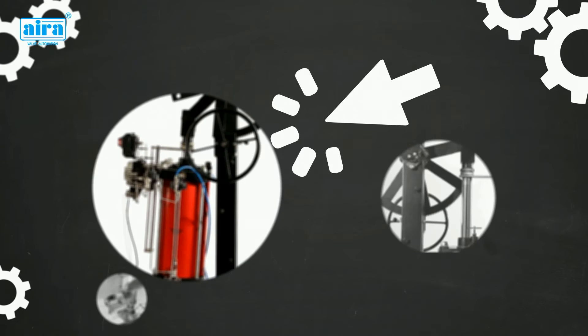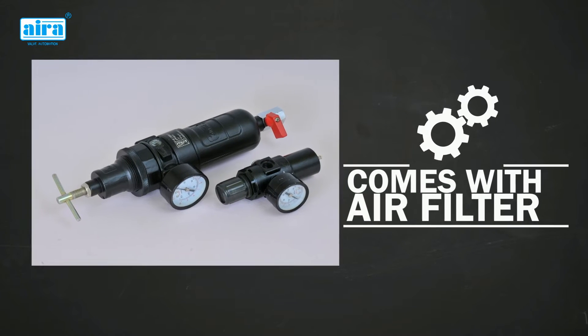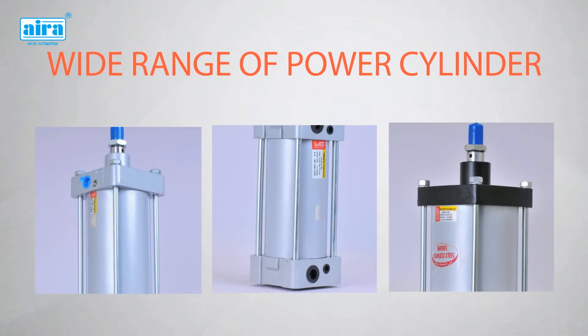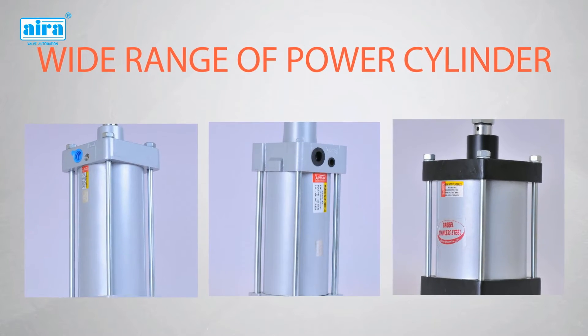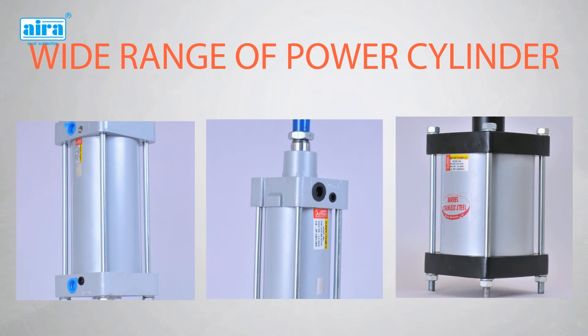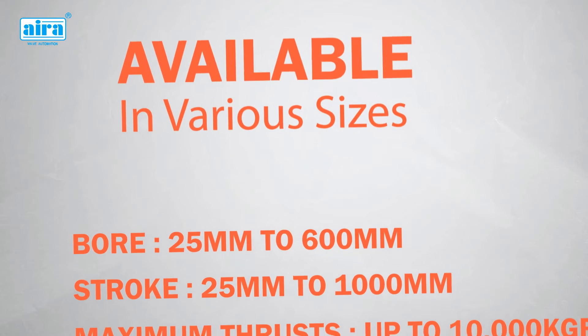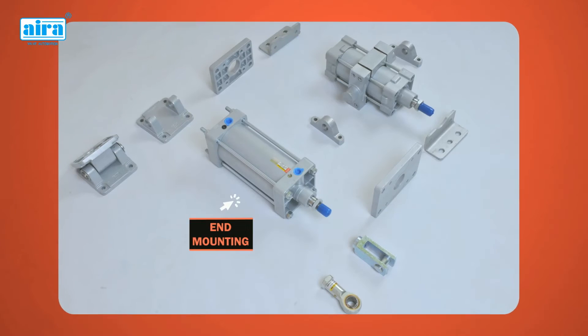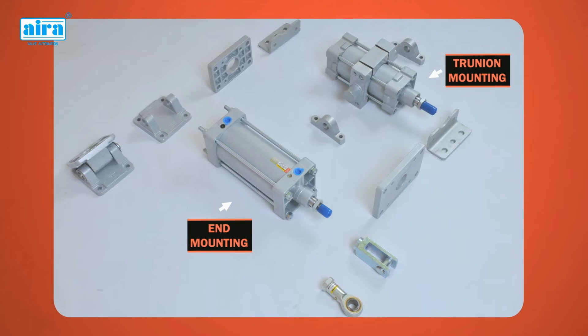The power cylinder comes with an air filter to filter plant air supply. A wide range of power cylinders is available to meet most of the industry requirements. They are available in various sizes and maximum thrusts with end or trunnion mounting options.